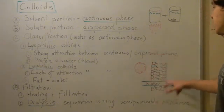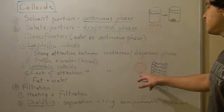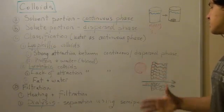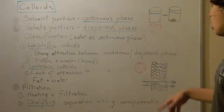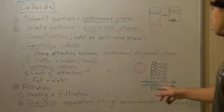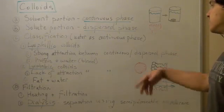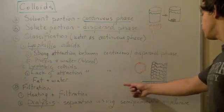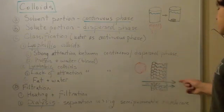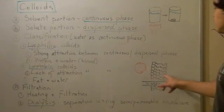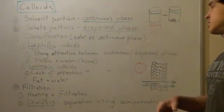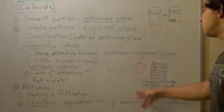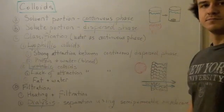For example, using a semipermeable membrane with red blood cells mixed with water: the red blood cells are the dispersed phase, and the water is the continuous phase. Water will flow easily from one side to the next. The red blood cells are too big to pass, so they will be left behind on one side.